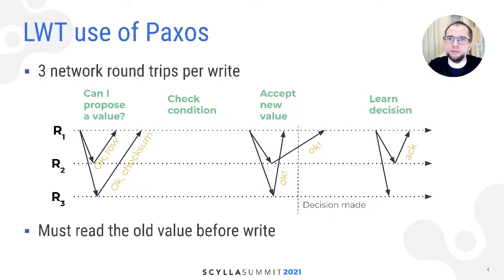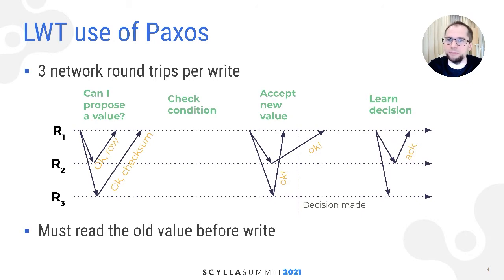In Scylla, LWTs are based on the PAXOS consensus algorithm. PAXOS is a leaderless protocol in which each participant stores little state, which was an advantage considering that to be compatible with Cassandra, Scylla needed to allow each partition to be independently available. PAXOS runs three rounds of network messages to commit each transaction — one more round than Cassandra, but still more than necessary in the optimal case.